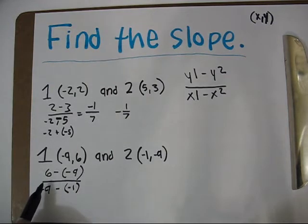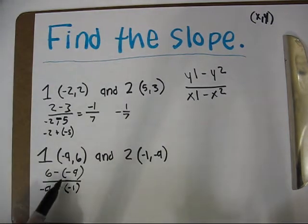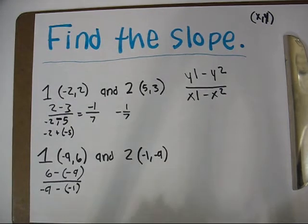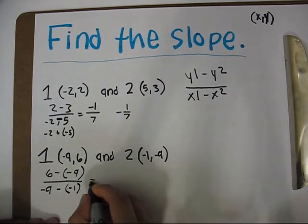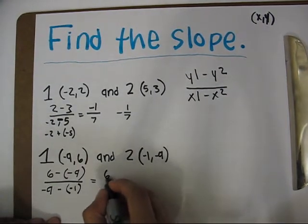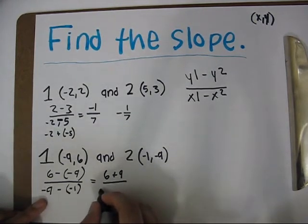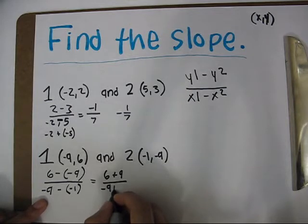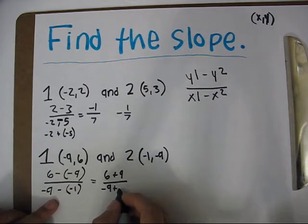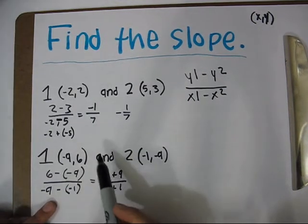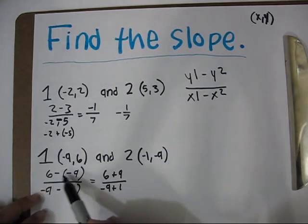So what we do is 6 minus negative 9. Or we could do, so I equal here, 6 plus 9 and 3 and negative 9 plus 1. We do this as a keep change opposite.